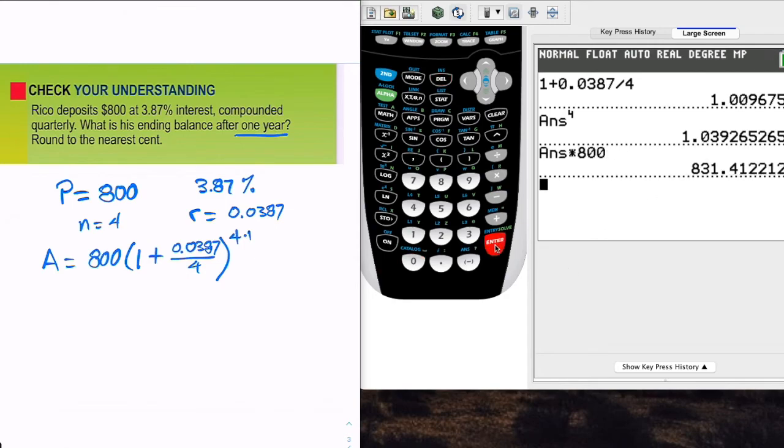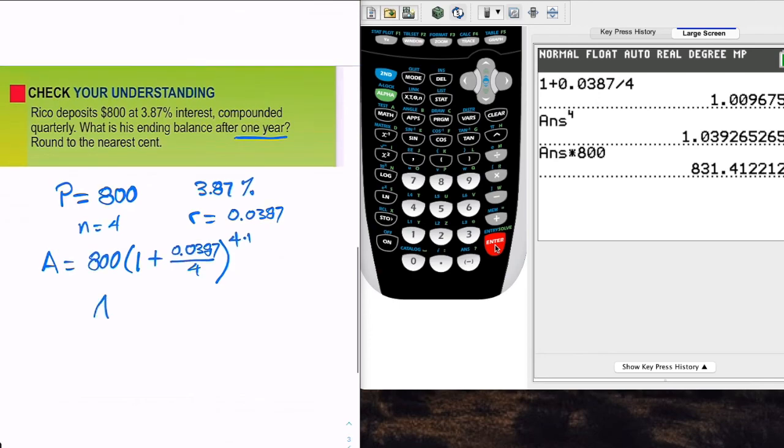And we now have that Rico, after one full year invested in this account, has an amount of $831.41. And that is Example 1 and the Check for Understanding done correctly.